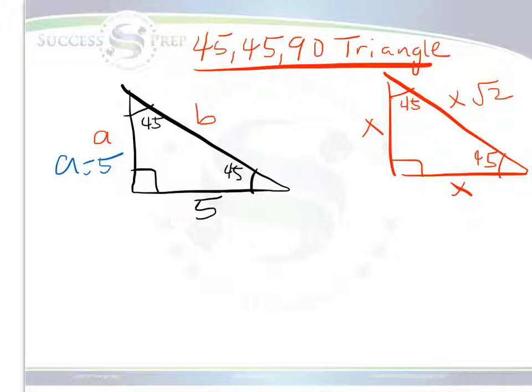So essentially, all you have to do at this stage is just say, well, I already know that this is 5 and this is 5, so this b has to be pretty much the x root 2, which is 5 root 2, playing off of what we know on this triangle, this side. So the x, which is 5, is going to be 5 root 2, just like it is here.